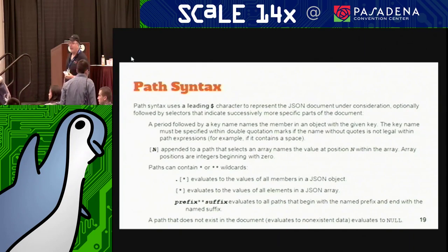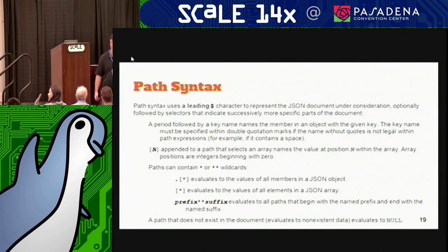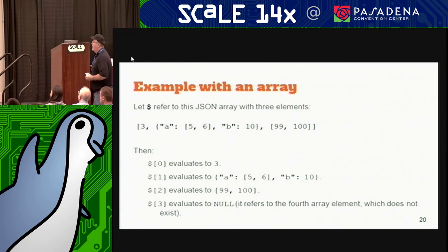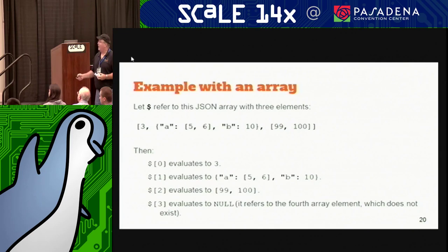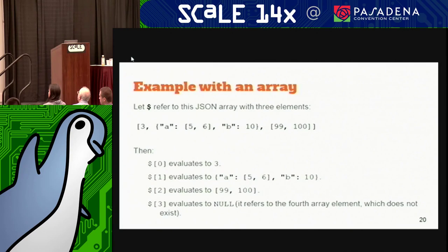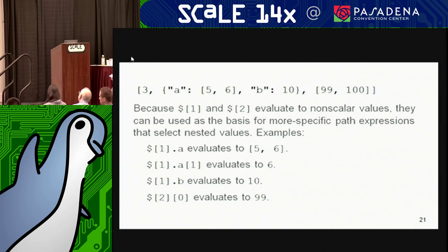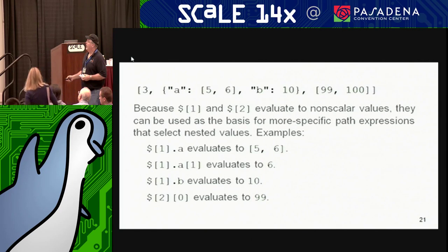Here's an example of an array. Dollar refers to the entire array. Dollar zero evaluates to the first element; the array count starts at zero. Dollar one is the second value, dollar two is the third. There's no fourth argument, so dollar three gives you back null. Because dollar one and dollar two are non-scalar values, you could actually dig down further — for example, one dot a equals a sub-value, and one dot a dot one goes deeper still.